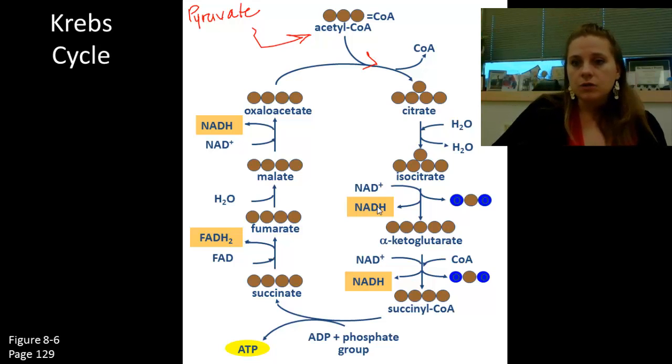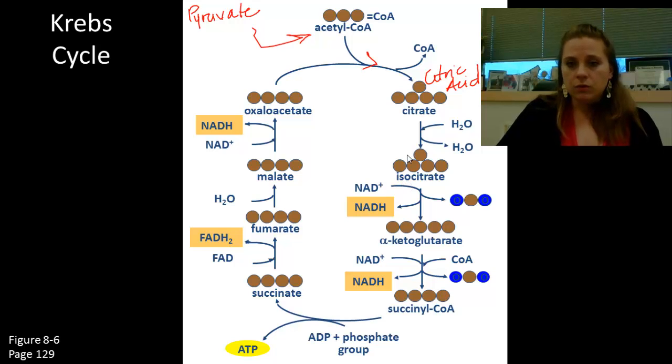So here, once we get our acetyl CoA coming in, we're going to get it transformed into citrate that's also citric acid. That's why this is also sometimes referred to as the citric acid cycle. It has a few intermediates as we go down. You'll notice down here is where we begin to create the first cofactor of the Krebs cycle, NADH, by reducing it. At the same time, spitting out our first product, carbon dioxide.